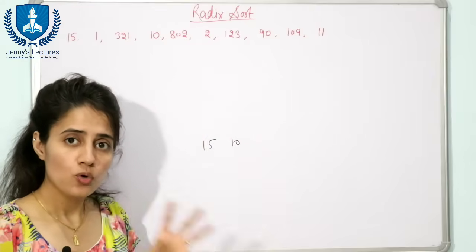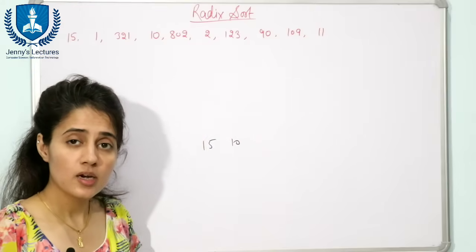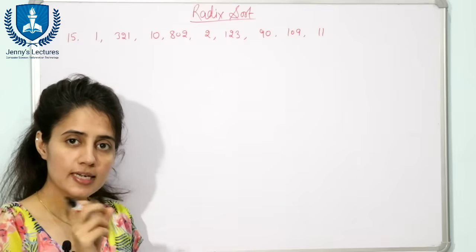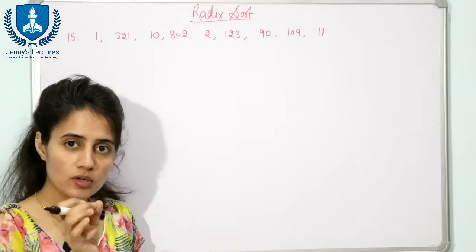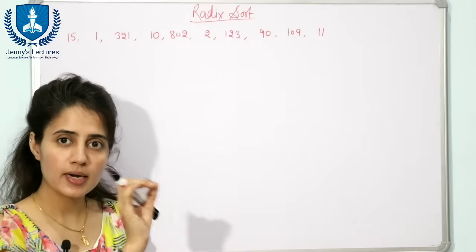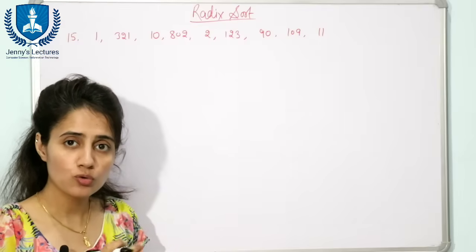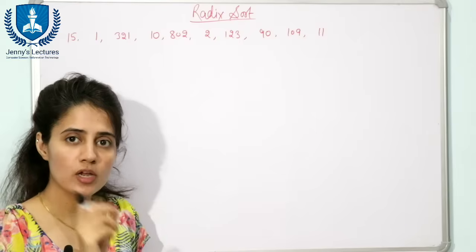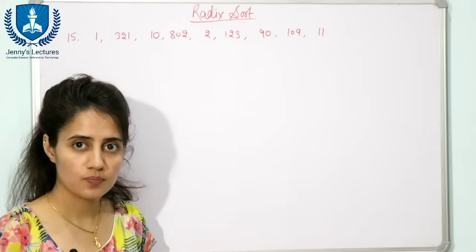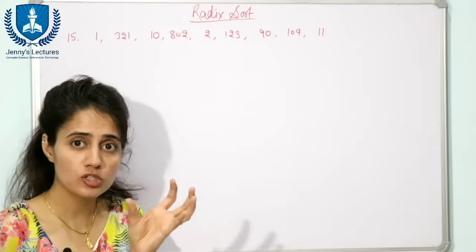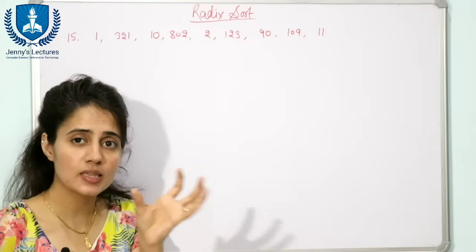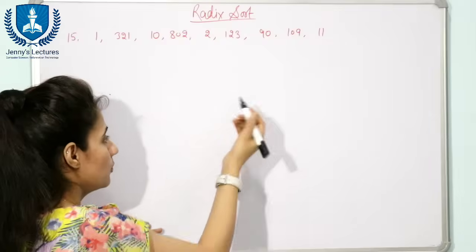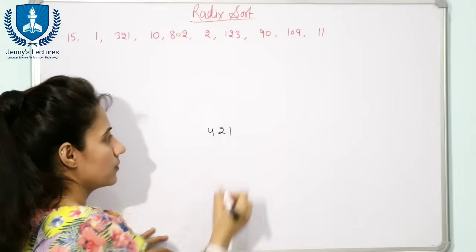So if there is no comparison, then how is the data to be sorted? The data is to be sorted digit by digit. We are going to sort the data according to the place value of the digit, or you can say the position of the digit in that number.